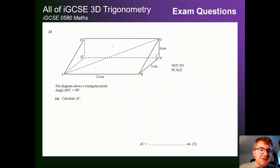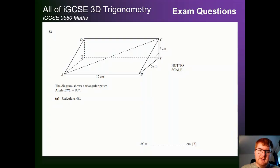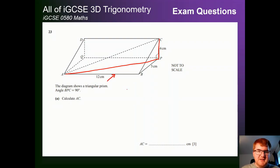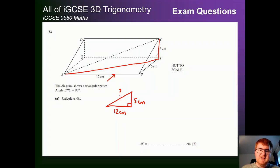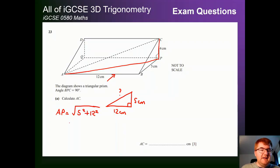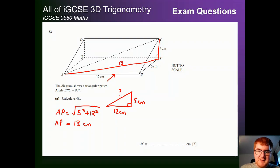This time we have a triangular prism. We have angle BPC equal to 90 degrees, and our first task is to work out AC — this side going all the way across. We use the base to help us. Drawing a right angle triangle with 12 centimeters and 5 centimeters: the length of AP is the square root of 5 squared plus 12 squared. I know this one — it equals 13 centimeters, a nice exact value.